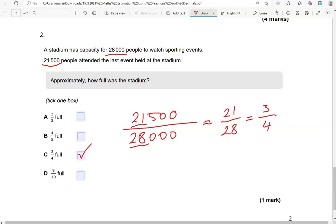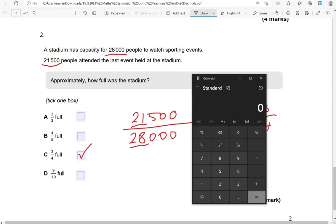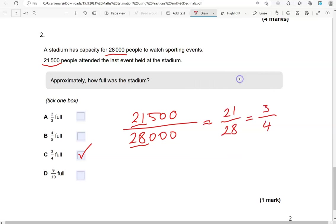But the other way to do it, especially as we have a calculator here, and if you didn't really spot the link between the 21 and the 28 being multiples of 7, you could go 21,500 divided by 28,000, which gives us 0.76. So this is about 0.75, which is 3 quarters as well. So that's another way to work it out.